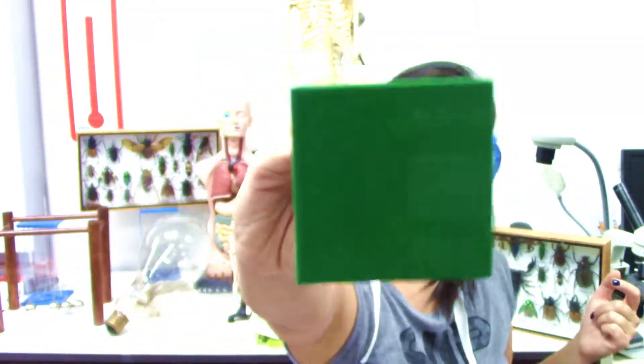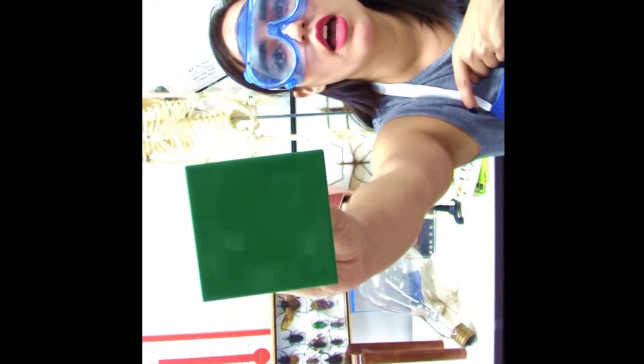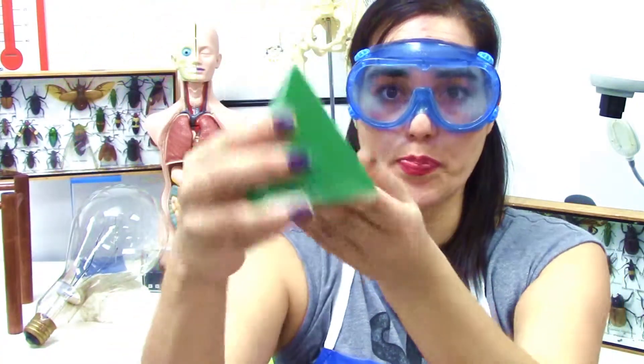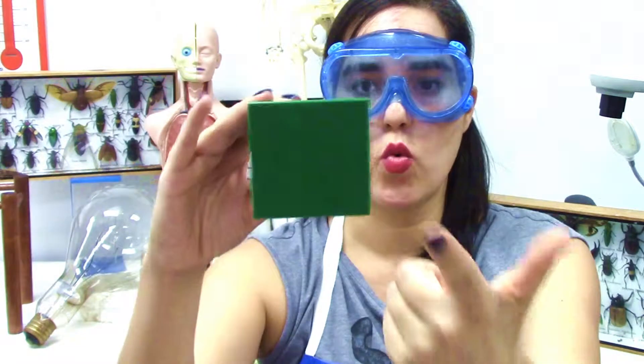You're so smart! You guessed it. Well, you did not guess it, you know that this is square because it has four equal sides. So it has one face that is a square.